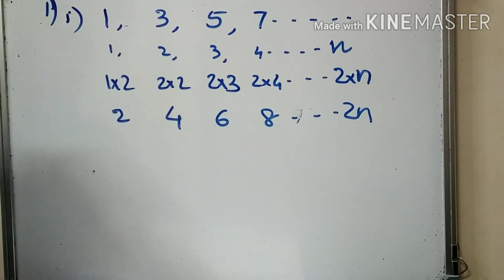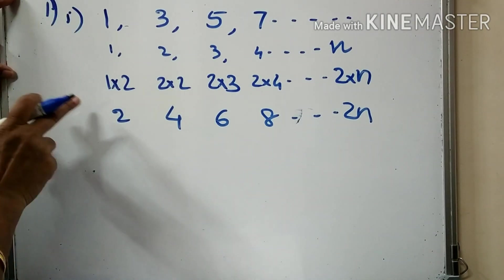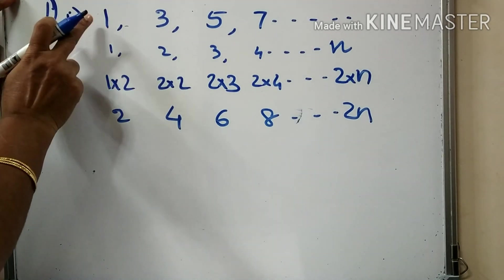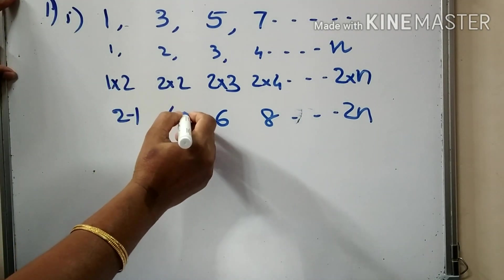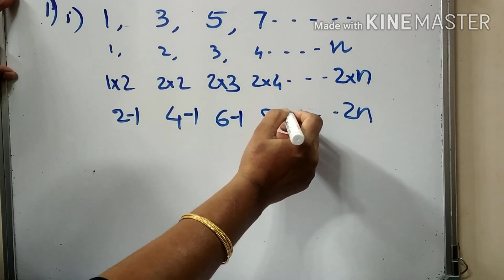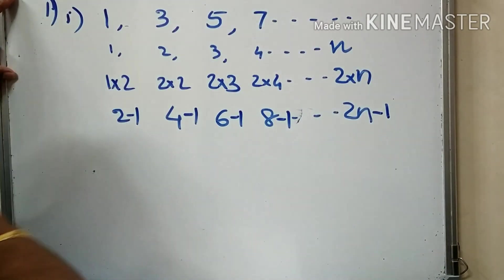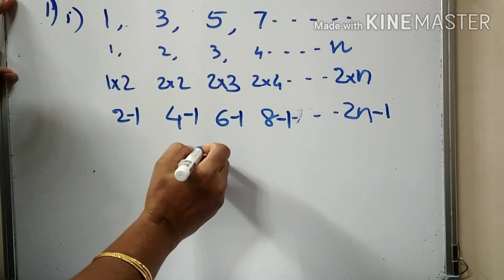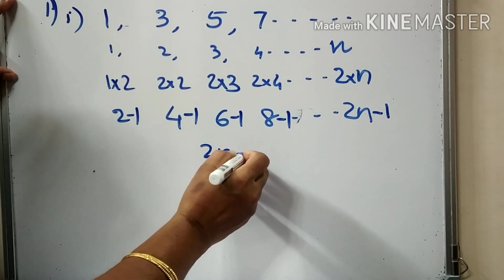This is a sequence. 2 will need 1. How to do 1: 1 minus... 4 minus 1, 6 minus 1, 8 minus 1, last: 2N minus 1. Order numbers in the sequence — algebraic form is 2n minus 1.